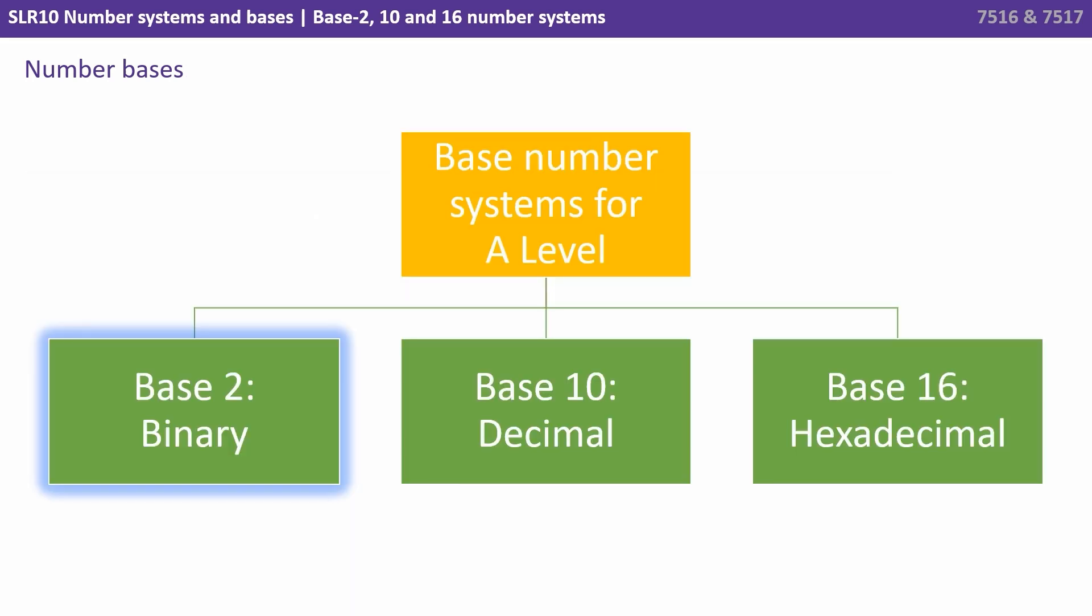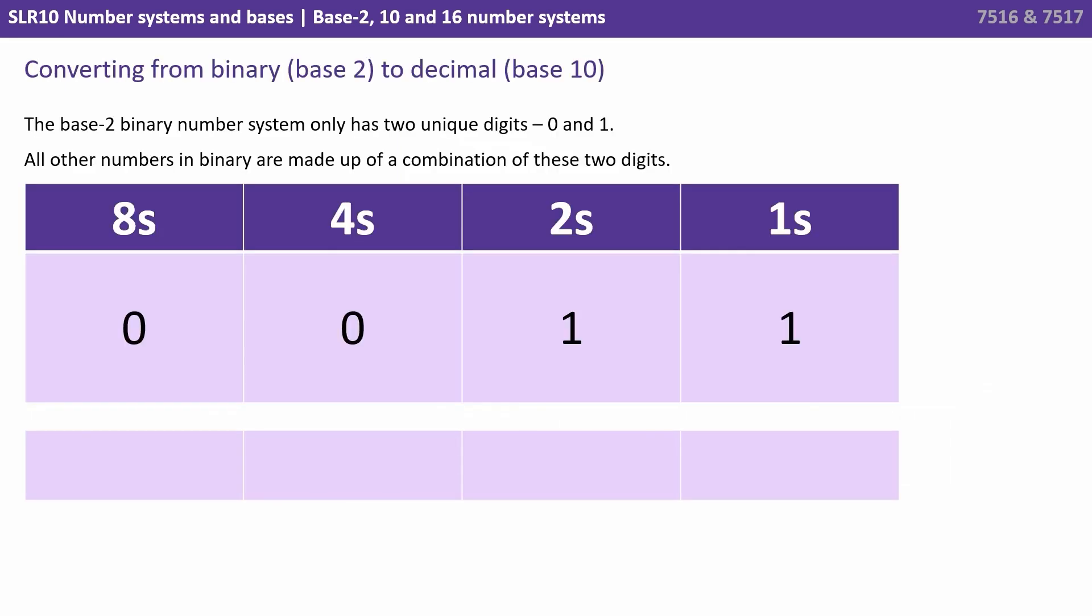Now let's look at what is arguably the most famous number system when it comes to talking about computers in the world of computer science and that's base 2 binary. So the base 2 number system only has two unique digits 0 and 1. All other numbers in binary have to be made up of a combination of these two digits.